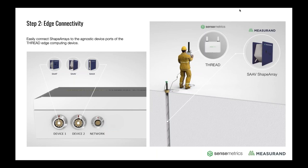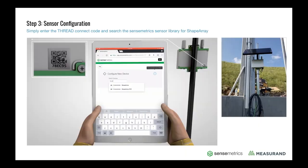A green casing cap protects from the elements — that's the entire installation process. Installing a Shape Array is very easy. On the outside of the Thread, this is what plug-and-play means: there are two device ports on the outside of each Thread, so you can hook two Shape Arrays regardless of length into it. Once plugged in, it automatically detects how it's installed, retrieves the serial number and calibration file, and you can start seeing data on the SenseMetrics platform within minutes of installing the instrument.